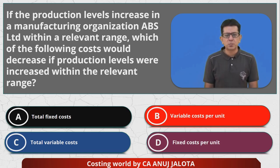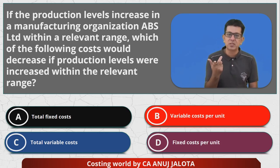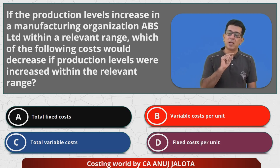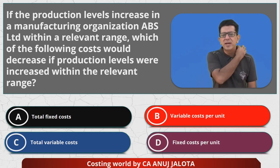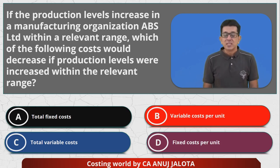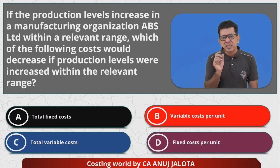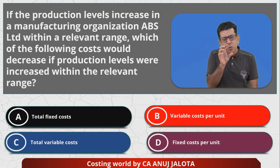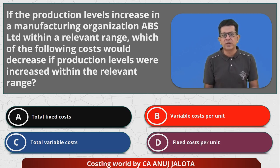Variable cost per unit might fall to some extent because of some reasons. If we are producing in bulk, we will be buying in bulk also, so raw material cost — we might get some discount. That is one thing. Second, your labor will start to learn because of the learning curve. But these are very small things. If production will increase only within a limited range, I don't think variable cost per unit will get affected.